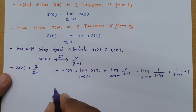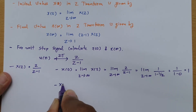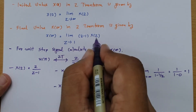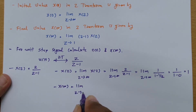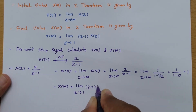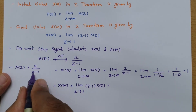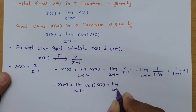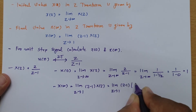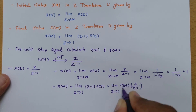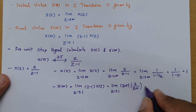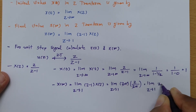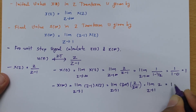To calculate the final value, the final value theorem states X(∞) = lim(Z→1) (Z−1)·X(Z). Placing X(Z) = Z/(Z−1), we get lim(Z→1) (Z−1) · Z/(Z−1). The (Z−1) terms cancel, giving lim(Z→1) Z. Placing Z = 1, the result is 1.